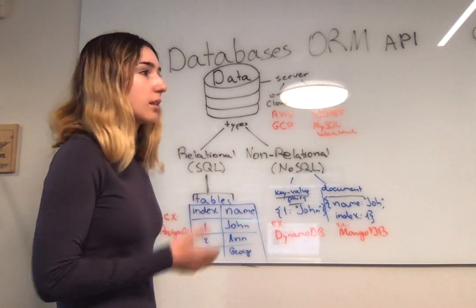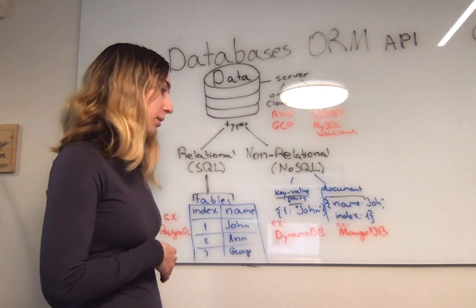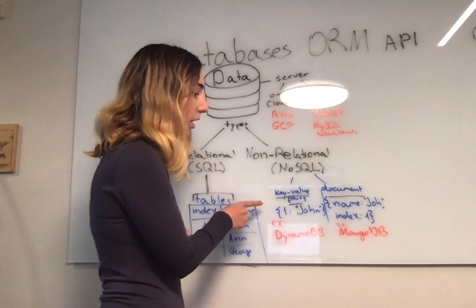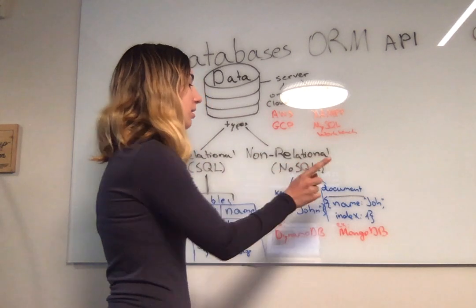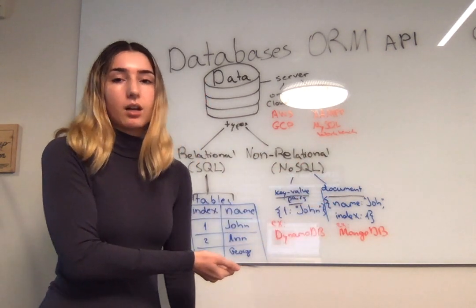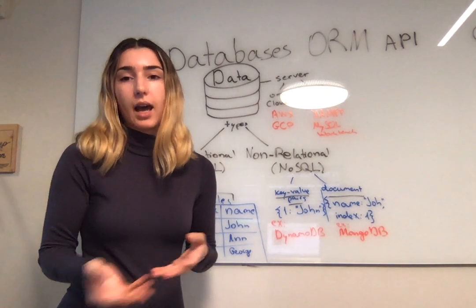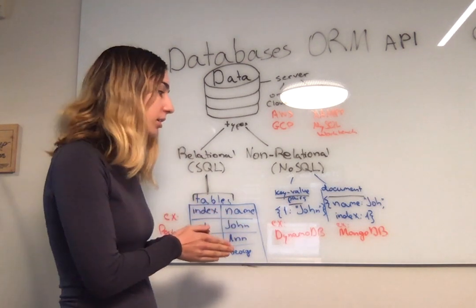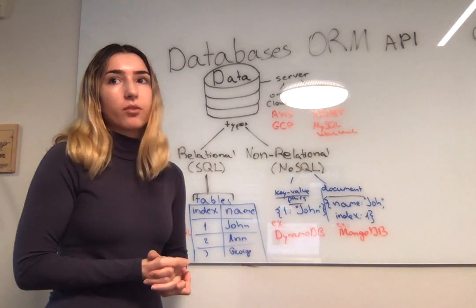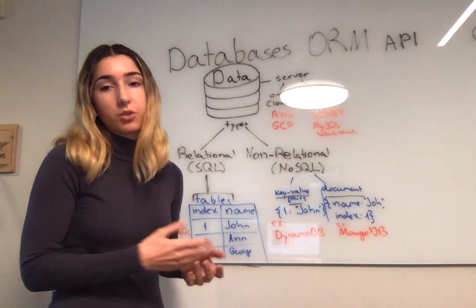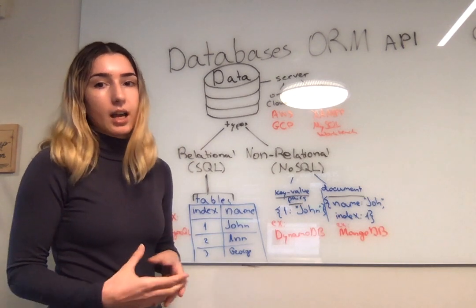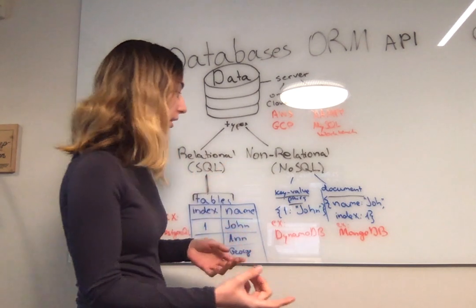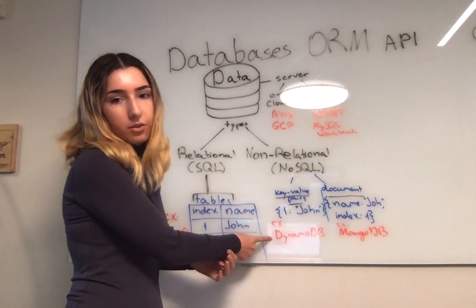Moving on to non-relational databases, there are several types and they are each used for different purposes. Two of the most popular ones are key-value pair databases and document databases. Key-value pair is basically like a hash map data structure — the way the data is stored in a hash map is very similar, and we fetch the data using the key. There are different hashing functions, some more complex than others, but essentially we use a hashing function to get the data. One industry standard for this is DynamoDB.